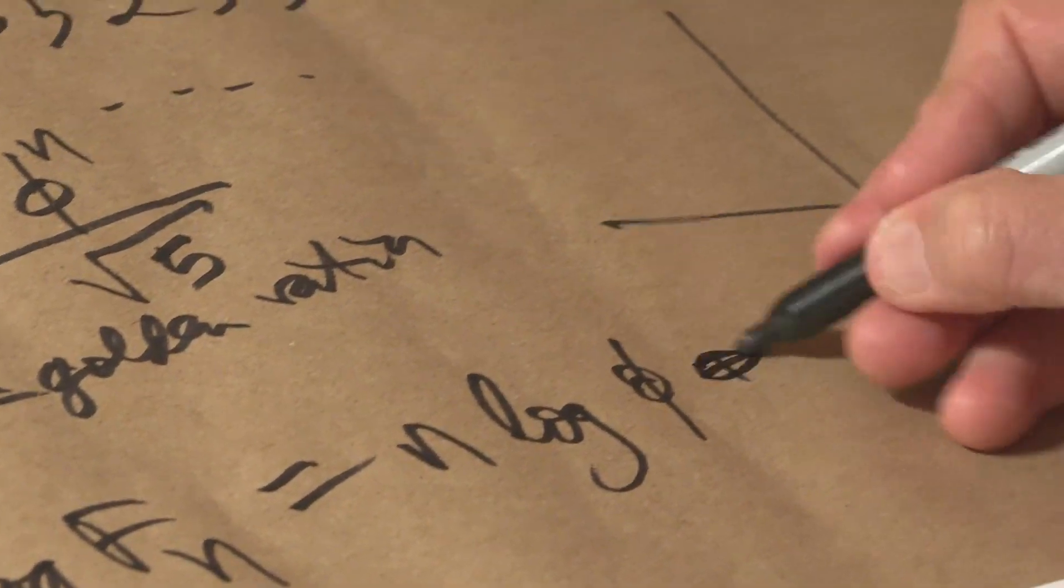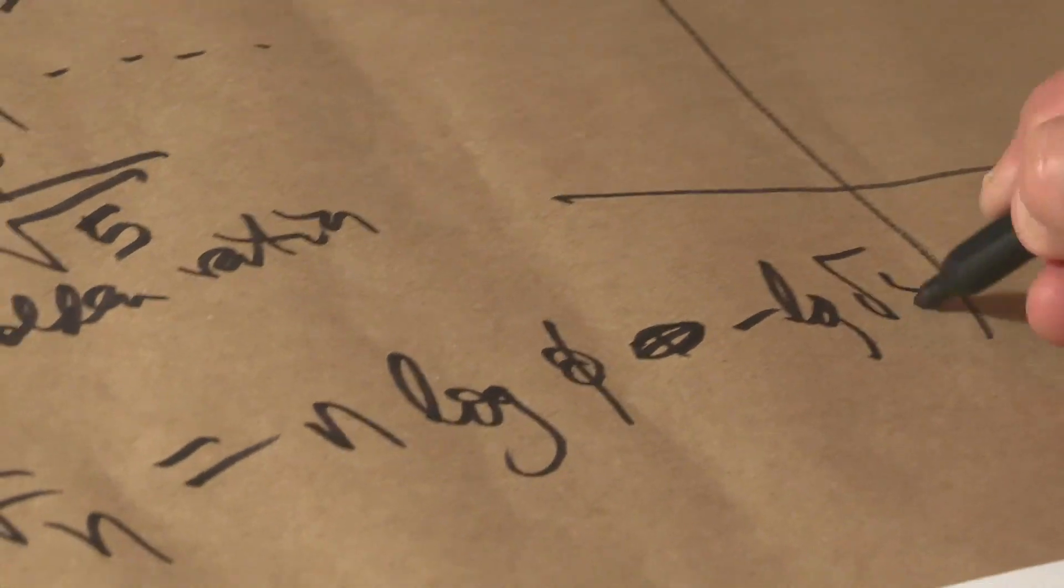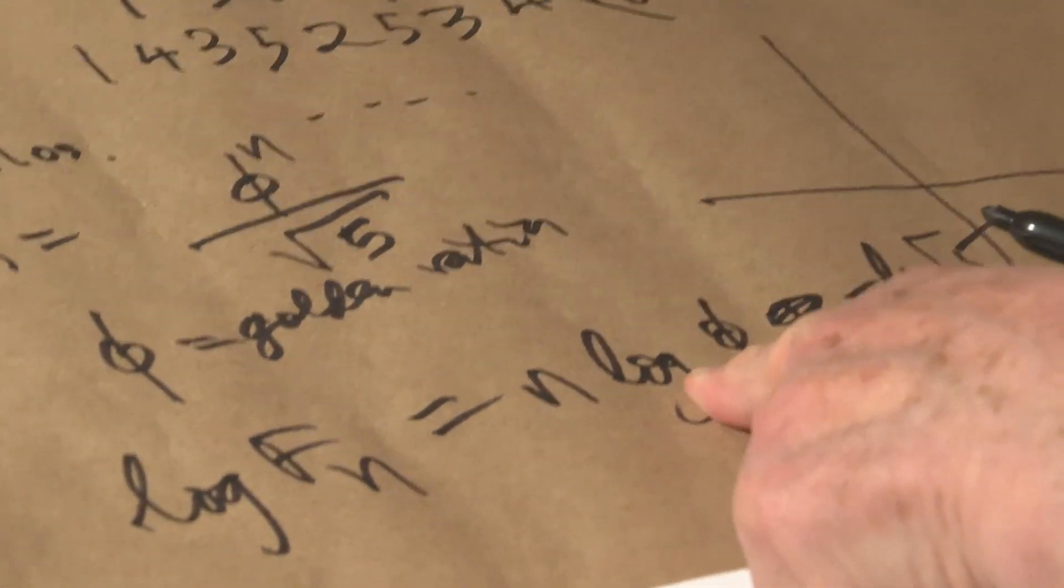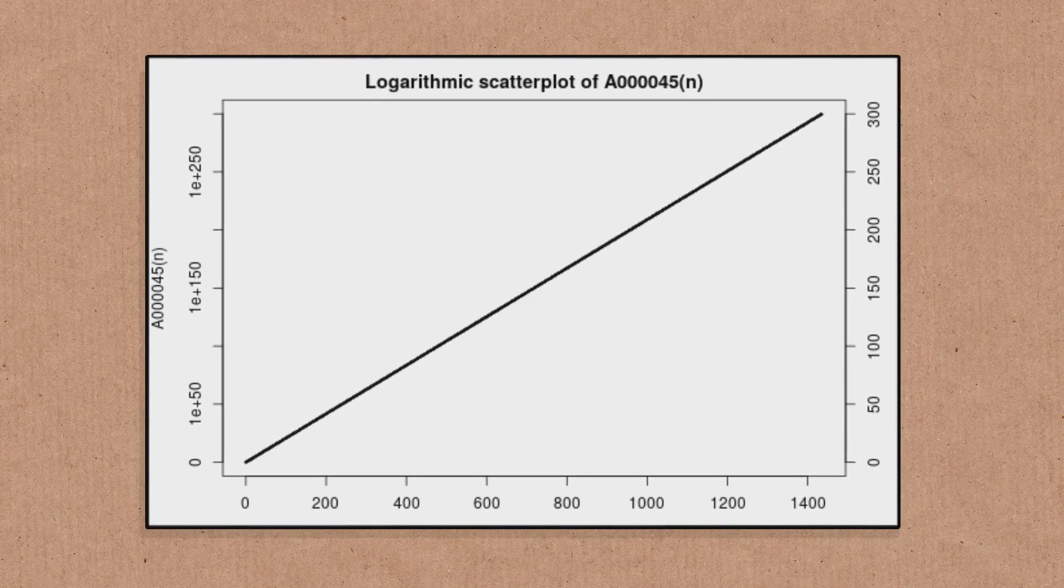Plus minus log root 5, something tiny. And it's a straight line, a slope log phi. So it's boring. It's a dead straight line.